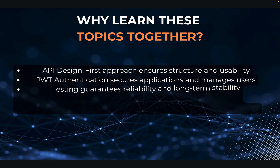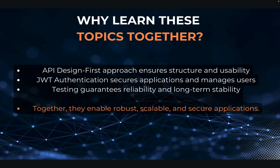So why should you learn these topics, and why does it make sense to learn them together? The API design first approach ensures structure and usability — you think first about your API endpoints and then start coding, because thinking before acting can save you time afterwards. JSON web tokens help you secure applications and manage users in an easy way, especially the sign-up and sign-in mechanisms. Testing guarantees reliability and long-term stability. Together, they enable robust, scalable and secure applications.